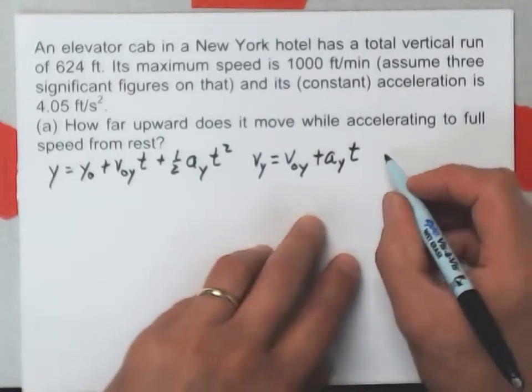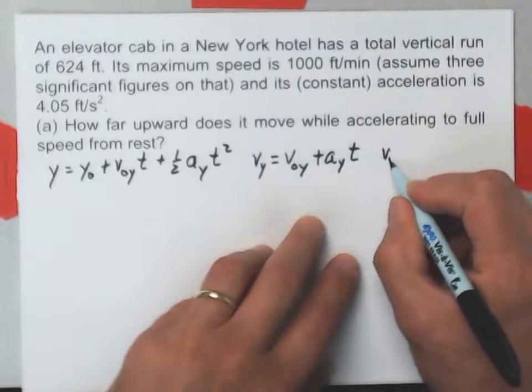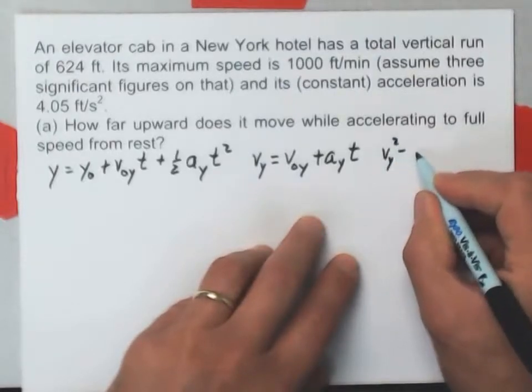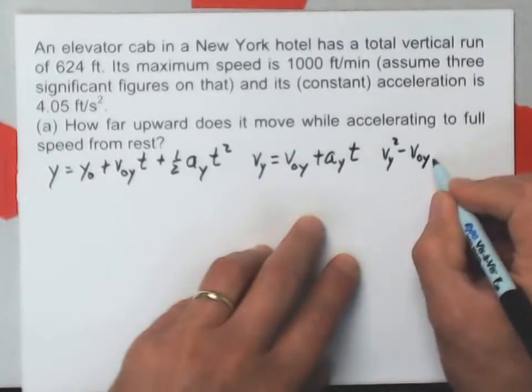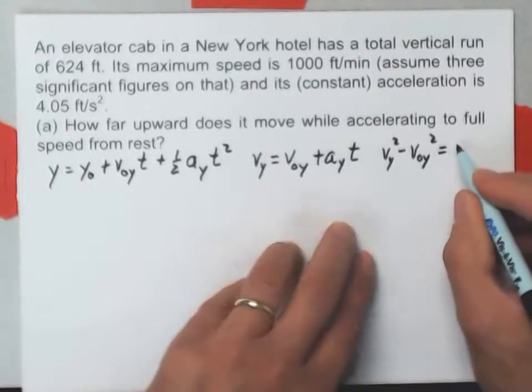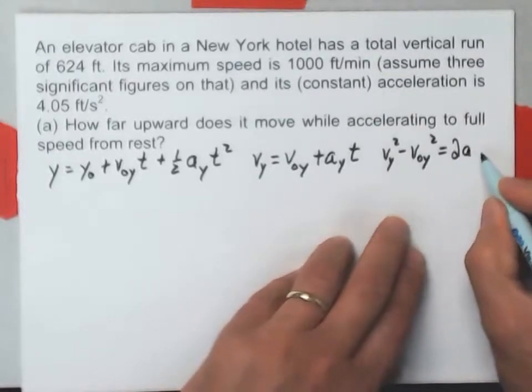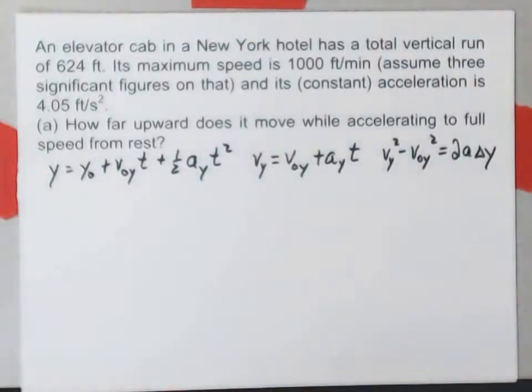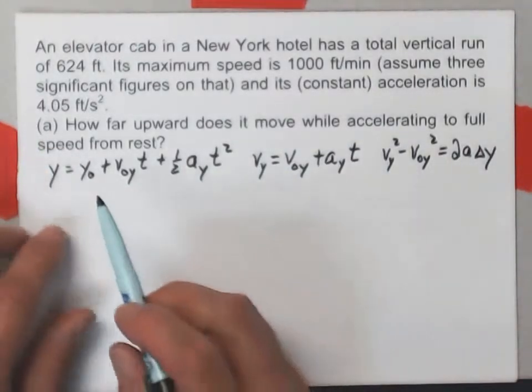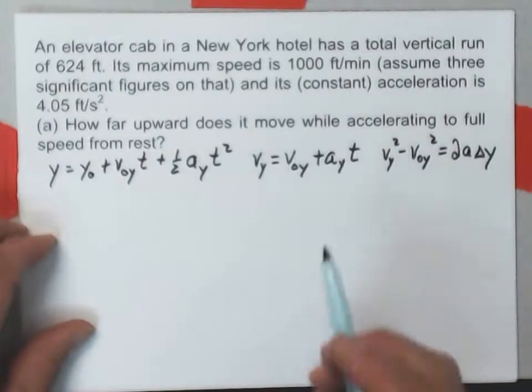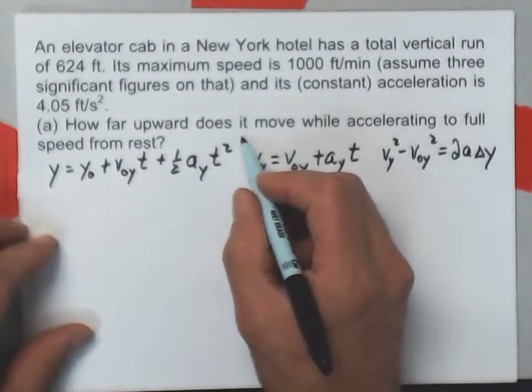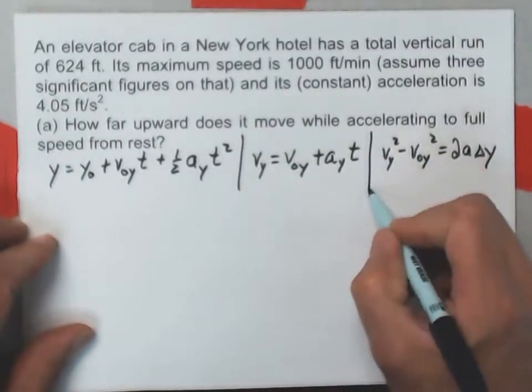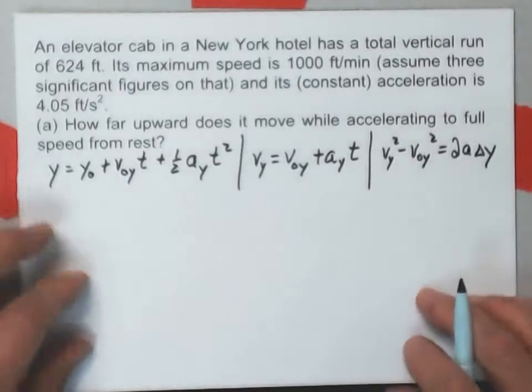And the third equation would be v sub y squared minus v naught y squared equals 2a delta y. I've replaced my x's with y's, but these are my three equations for motion with constant acceleration.